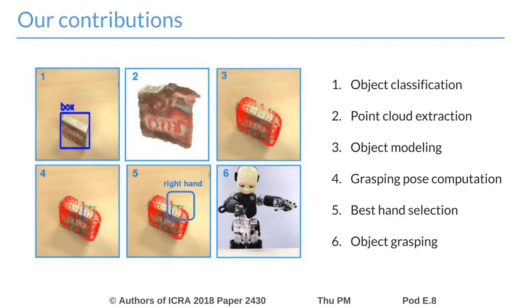We propose a modeling and grasping pipeline for humanoid robots equipped with two arms and a vision system supplying 3D information. This pipeline is obtained by improving our previous approach based on superquadric models and consists of the following steps.